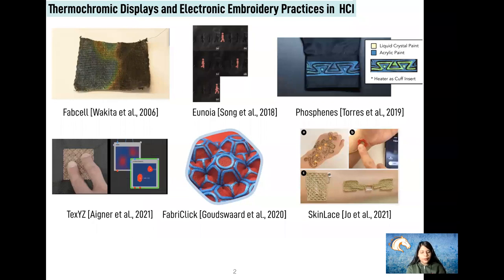To give a little background, in 2006, Wakita and colleagues introduced the idea of creating thermochromic textile displays using liquid crystal ink and conductive thread in a resistive heater circuit. The conductive thread is used to activate the thermochromic ink. Since then, there have been many applications of these kinds of displays, especially in creating animations in fabric and wearable artifacts.